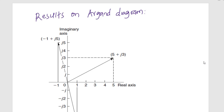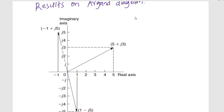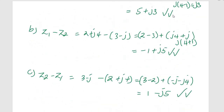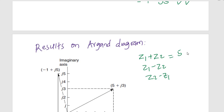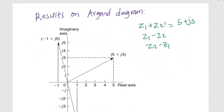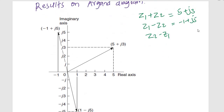To show the results on the Argand diagram, we need our three points: z1 plus z2 equals 5 + j3, z1 minus z2 equals negative 1 + j5, and z2 minus z1 equals 1 minus j5.